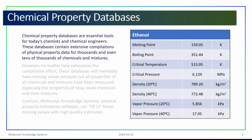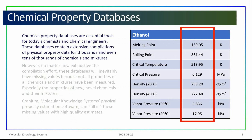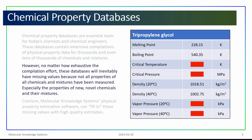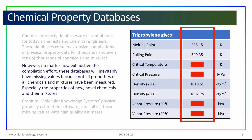Chemical and physical property databases are essential tools for today's chemists and chemical engineers. These databases often contain extensive compilations of physical property data for thousands and even millions of chemicals and mixtures. However, no matter how exhaustive the compilation effort is, these databases always have missing values, simply because not all the physical properties of all the chemicals and mixtures have been measured — especially the physical properties of new, novel chemicals and mixtures.